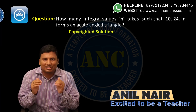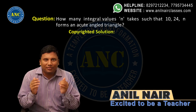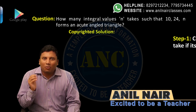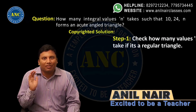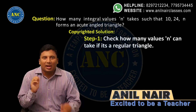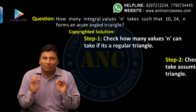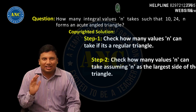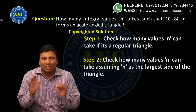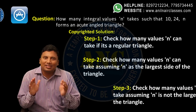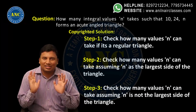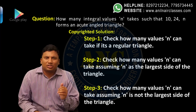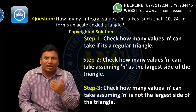We will solve the question in three steps. Step 1: we will check how many values n takes if it forms a triangle. Step 2: we will check what happens if n is the largest side. Step 3: what will happen if n is not the largest side. Then we will combine all three steps to get the answer.